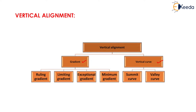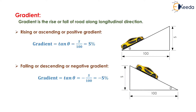Gradient is further subdivided into four parts: rolling gradient, limiting gradient, exceptional gradient, and minimum gradient. Similarly, vertical curve is also subdivided into two parts: summit curve and valley curve.